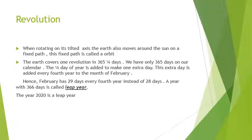Next comes revolution. When rotating on its tilted axis, the earth also moves around the Sun on a fixed path. This fixed path is called the orbit. Now let us see what is a leap year.